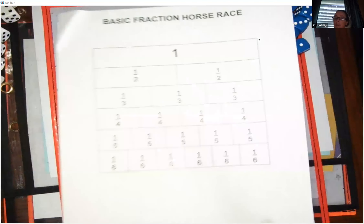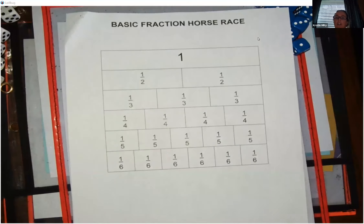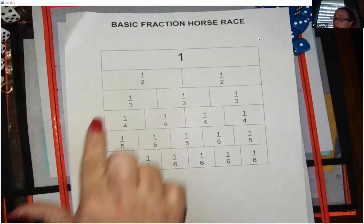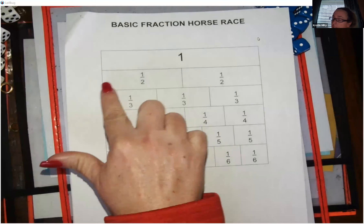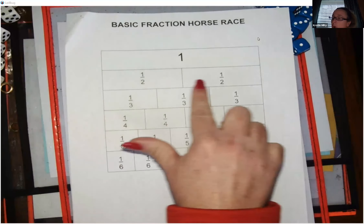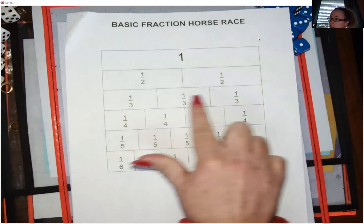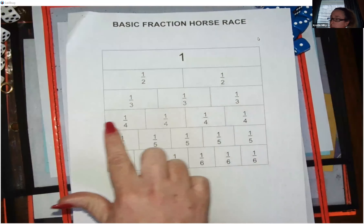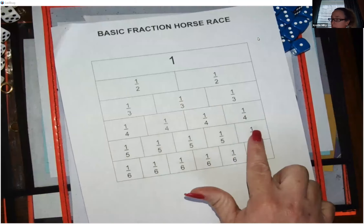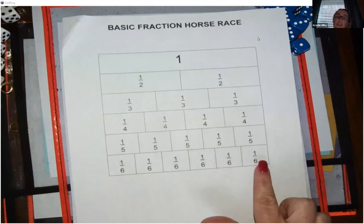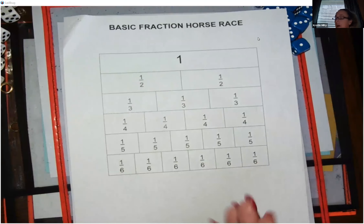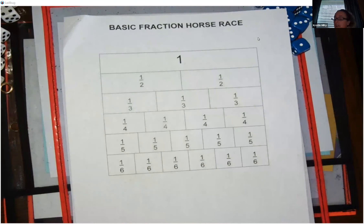I also gave you a download which has the fraction strips on it. At home, I would print this off and have your child color them — color the whole red, halves blue, thirds yellow, fourths green, fifths purple, and sixths gray. That way the color coding will help them see those different-size units and they can use this to help them compare.